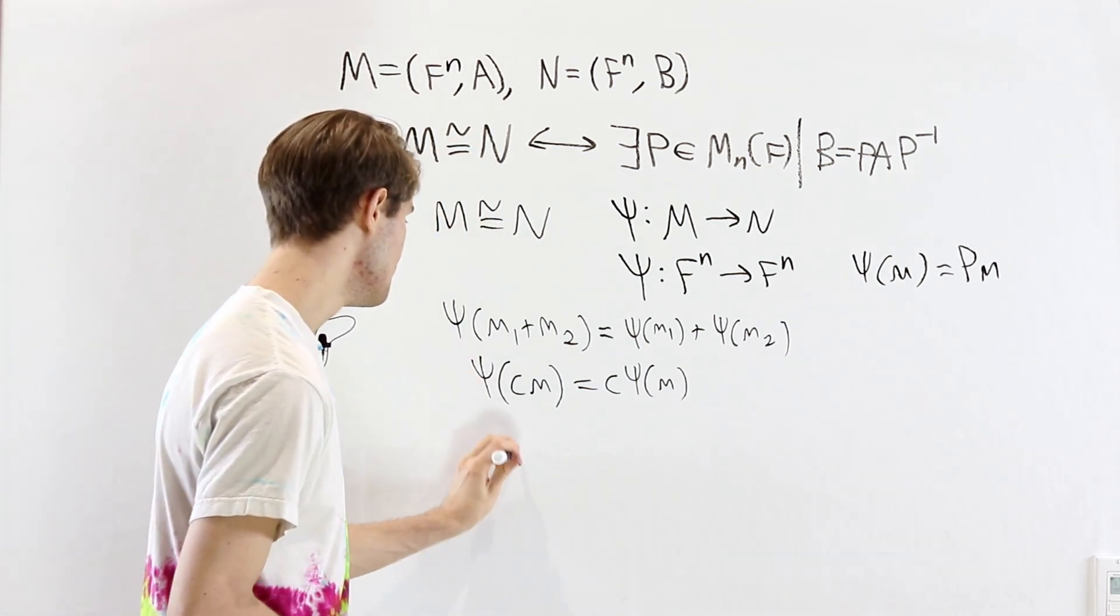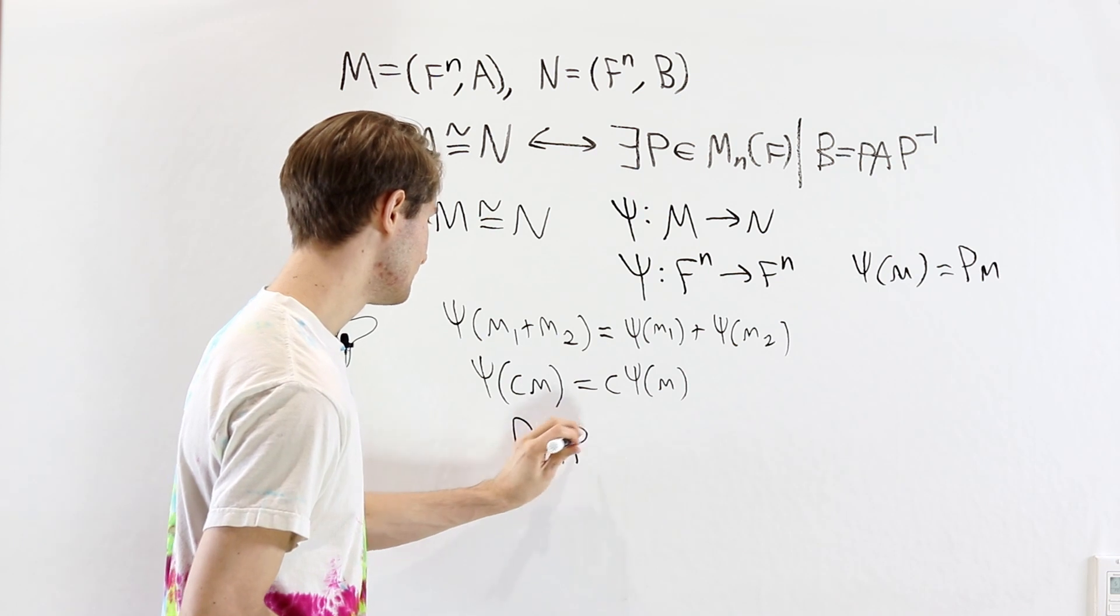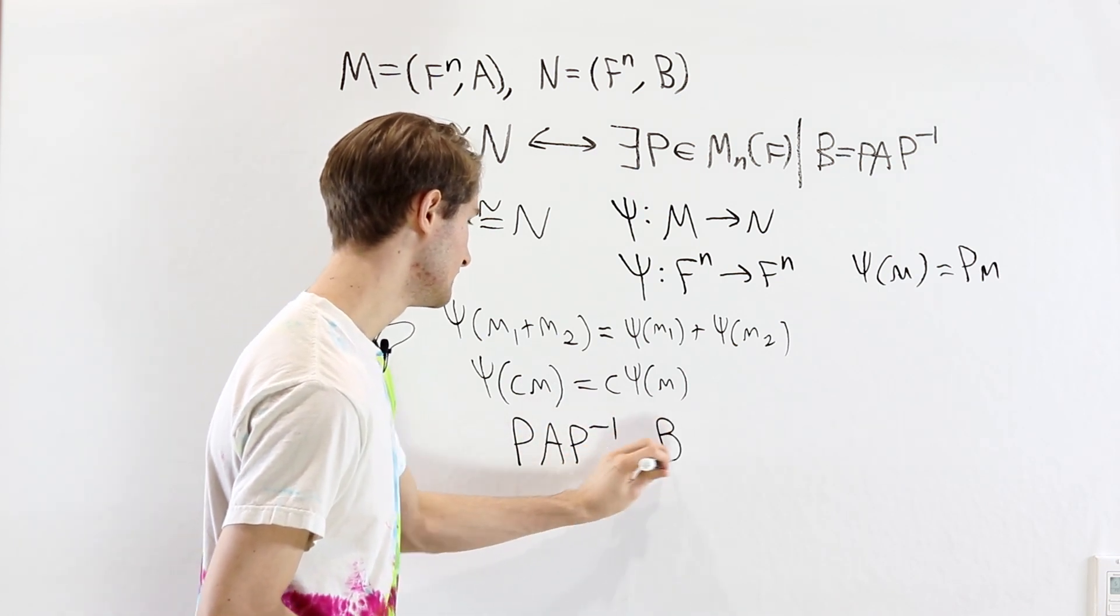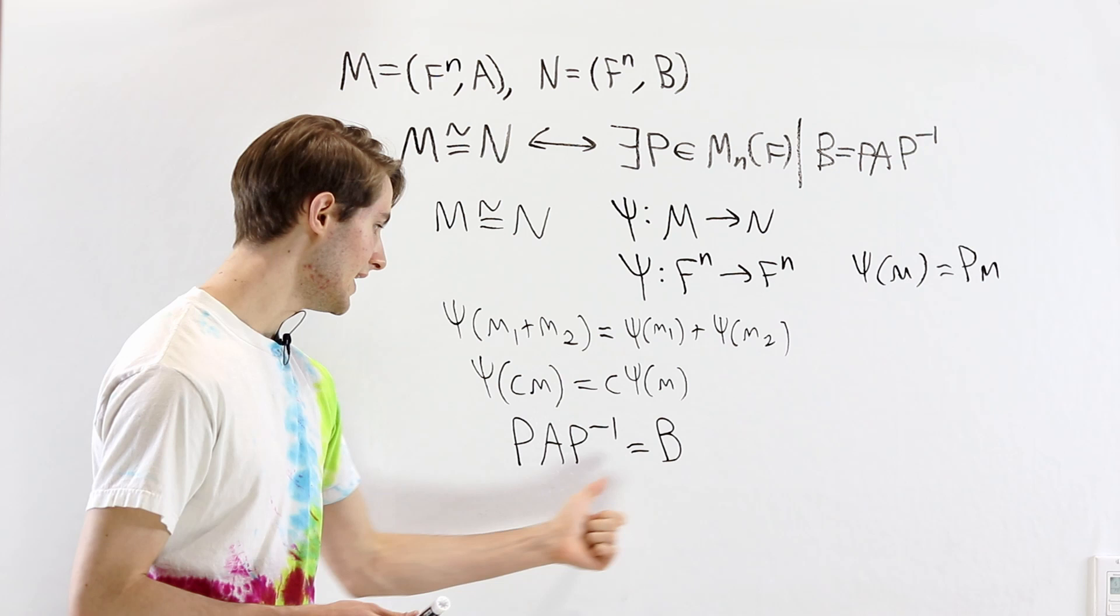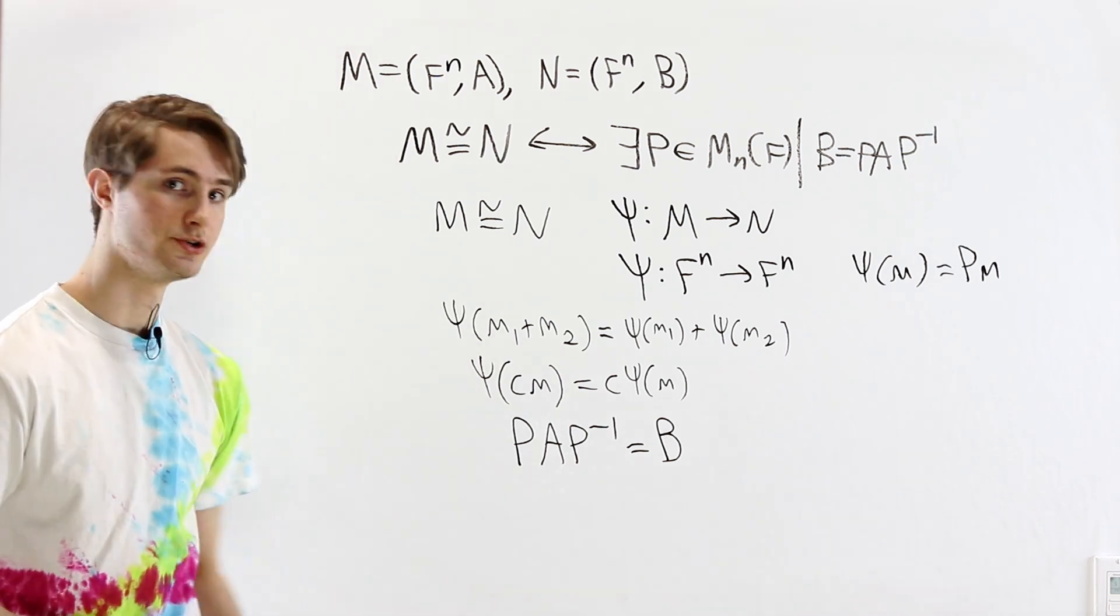If we do that, instead of PA equals BP, we're going to have PAP inverse equals B. And there we go. A is similar to B by the matrix P.